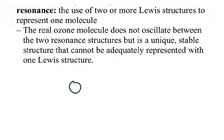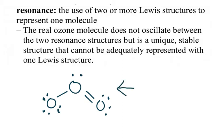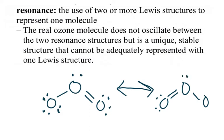When you draw this more accurately, ozone will look something like this. You'll learn when you cover VSEPR that ozone has a bent structure. The double bond can either be on the right side or on the left side. These are the two structures that represent ozone. Again, you have this double bond delocalized, moving back and forth.